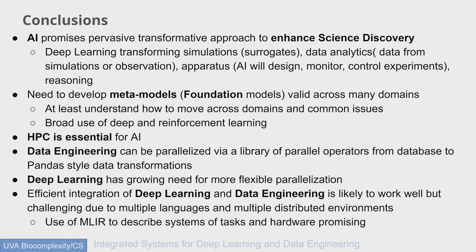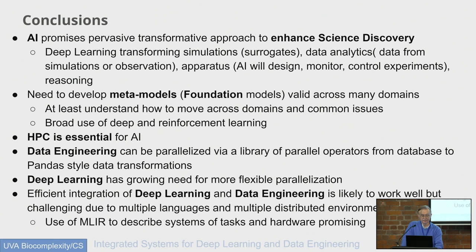In summary, we can hope that AI for science will be transformative. We should look at foundation models. I told you how data engineering can be parallelized with a library of parallel operators. Deep learning is starting to have a flexible parallelization scheme, and we would propose to integrate it and probably use MLIR to do that. Thank you.